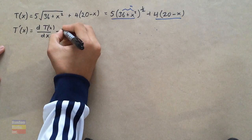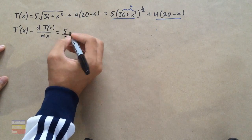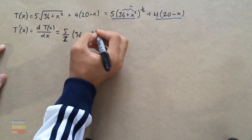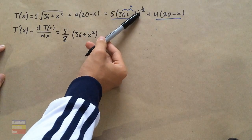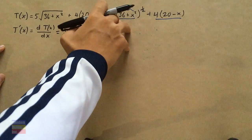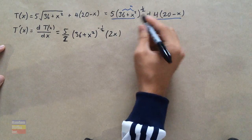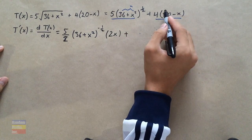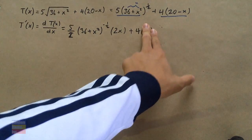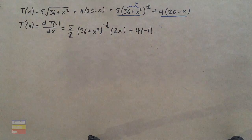Then we move to the next term. The inside of that bracket is treated as u, so the derivative of 4u is just 4. Then we multiply by the derivative of what's inside the bracket: the derivative of 20 gives nothing, and the derivative of minus X gives minus 1. So that term contributes minus 4. My battery briefly died when I was setting that part out, but we now have the full expression for the derivative T prime of X.